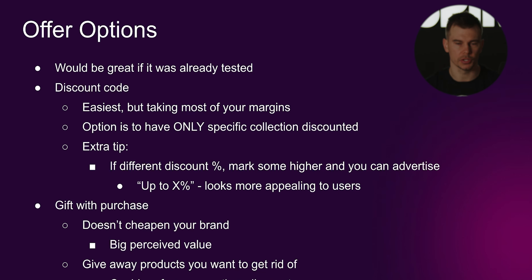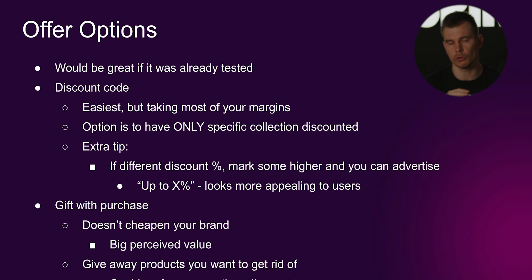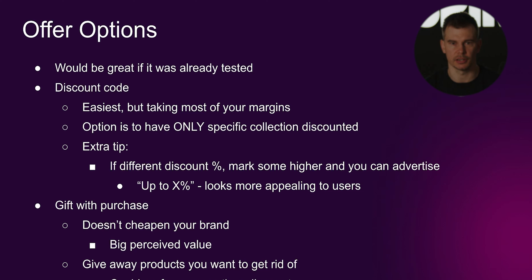What are your options in terms of the offer? It would be good if you've already tested it — for example, during Amazon Prime Day or Labor Day — because the last thing you want is to run an offer that's not converting. Options include a discount code, which is easiest but takes the most margin. If you have a specific collection not selling well, you can discount only that collection — say 50% — while everything else is 20%, and then advertise 'save up to 50%.' That's a cool trick used by Walmart and all major retail chains.